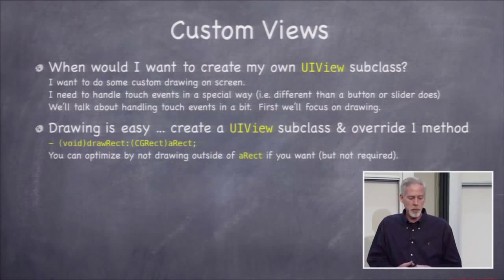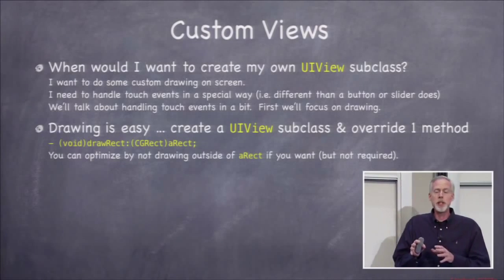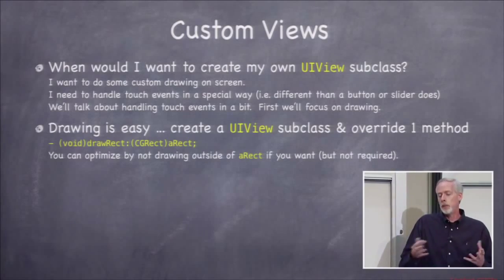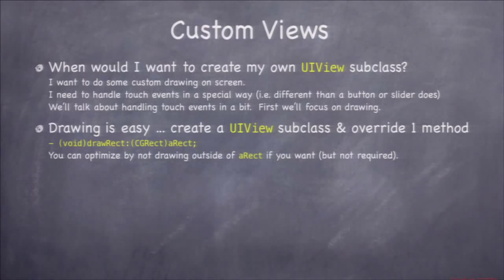Some views benefit from using that rectangle efficiently. For example, if you're drawing a graph and calculating every point, it's nice to only calculate the points in the visible portion instead of the whole thing. But if you're drawing a playing card, it's so lightweight that you can just draw all the parts without using the rectangle.